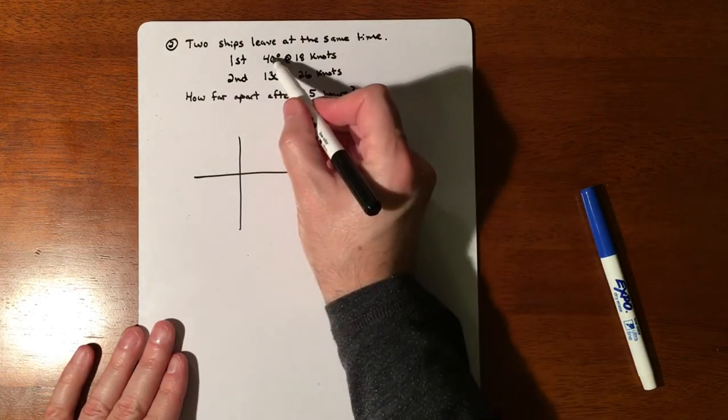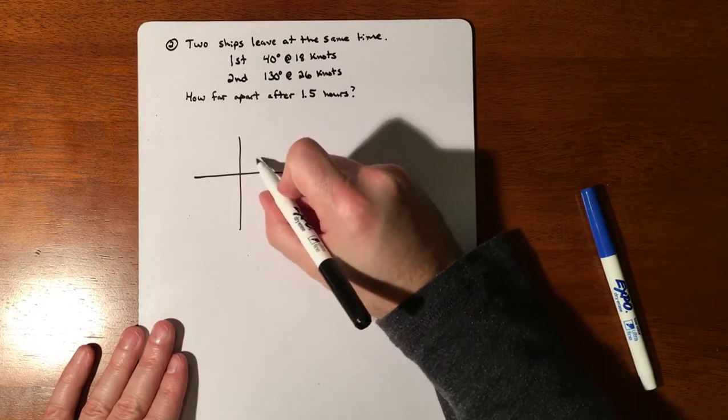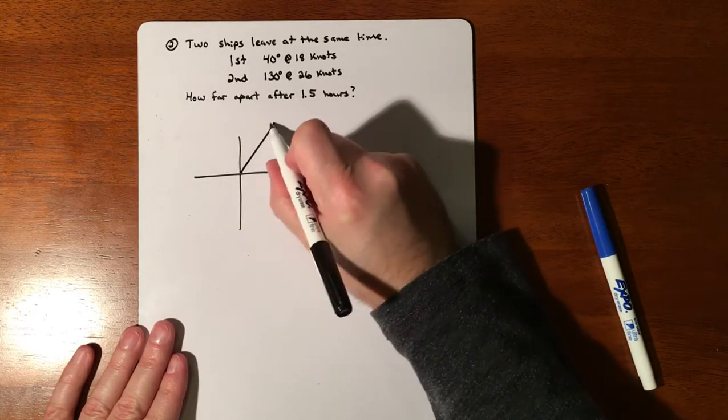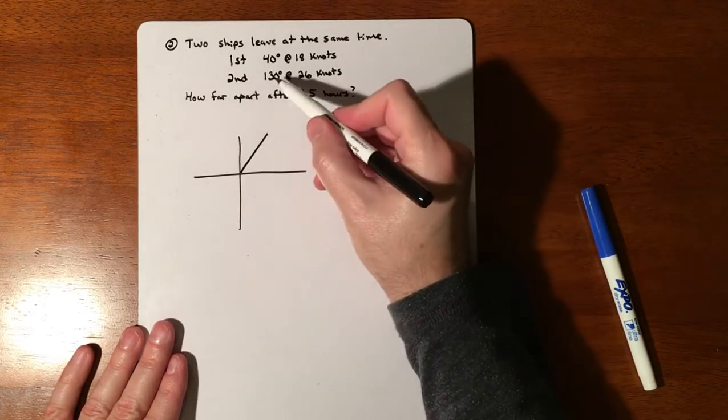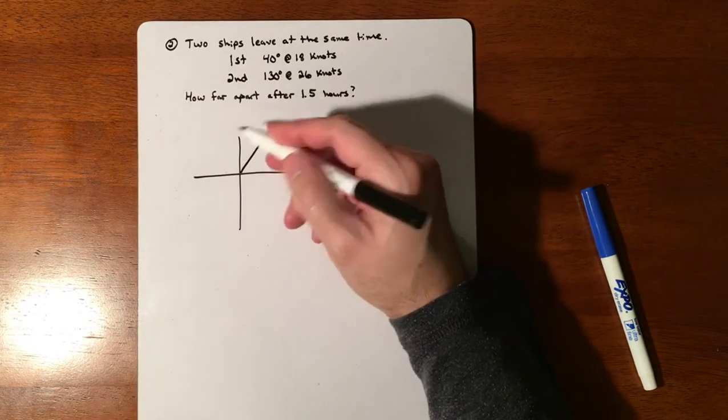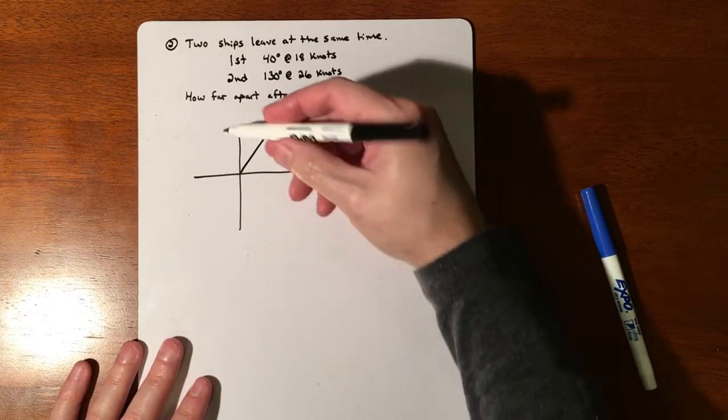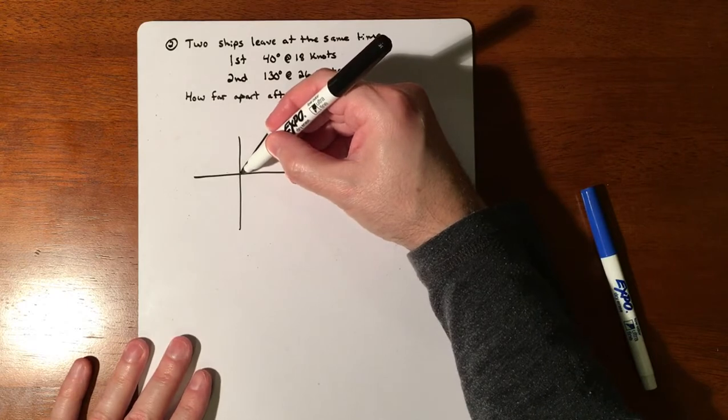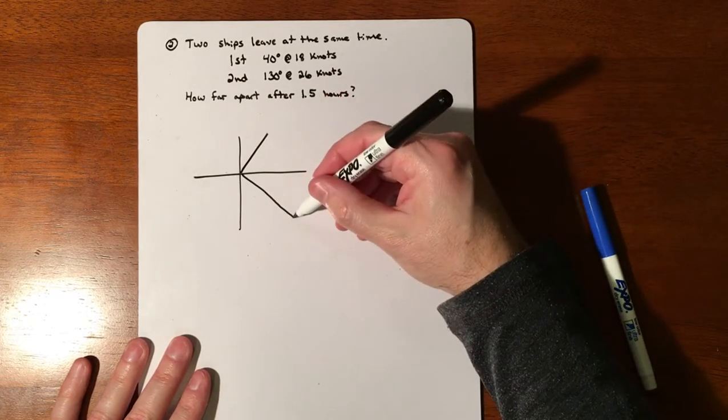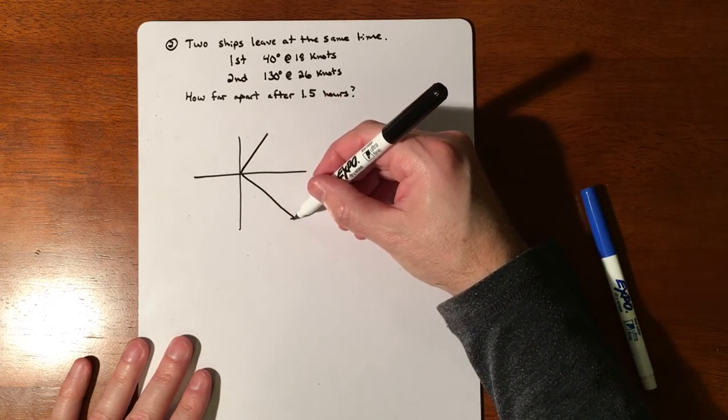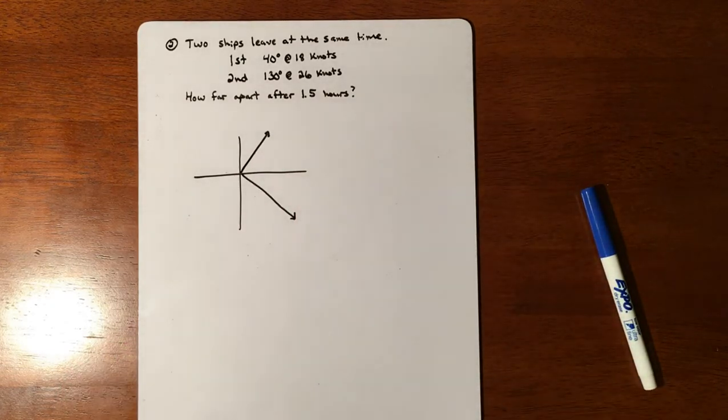Draw our x and y axis. If we go 40 degrees, we're bending 40 degrees off of true north, so that puts us favoring a little bit more north. Then over here we're going 130 degrees, so 130 degrees is 50 degrees shy of 180 or 40 degrees past the 90. It's going a little bit faster so we'll have it go out a little bit further.